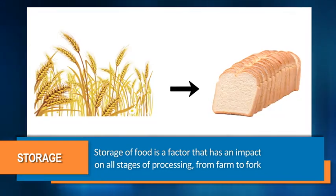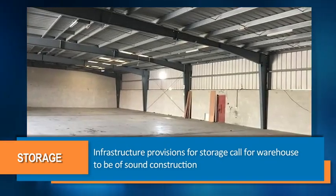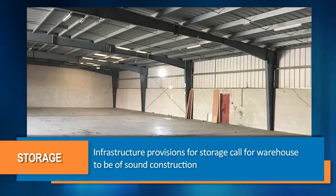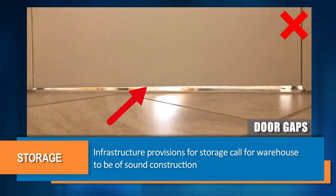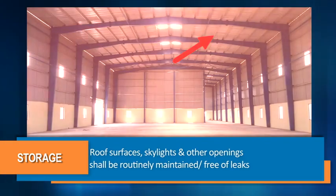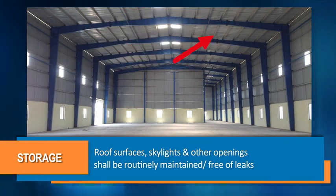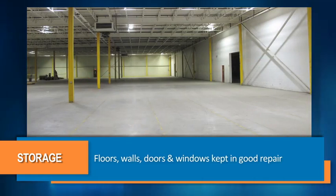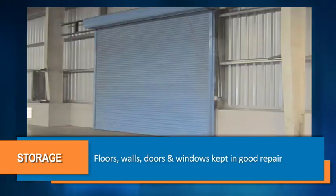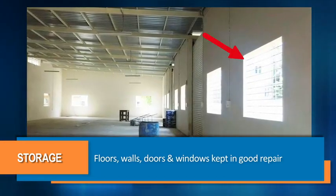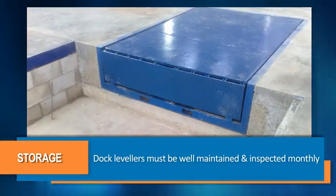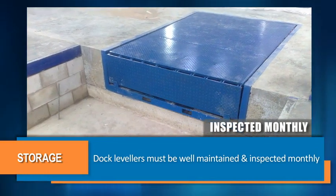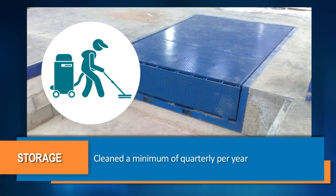Storage of food is a factor that has an impact on all stages of processing from farm to fork. The infrastructure provisions for storage call for warehouses to be of sound construction — for example, no holes in floors or walls, door gaps, or roof leaks. Roof surfaces, skylights and other openings shall be routinely maintained and be free of leaks. Floors, walls, doors and windows shall be kept in good repair and free of unprotected openings to prevent pest entry.